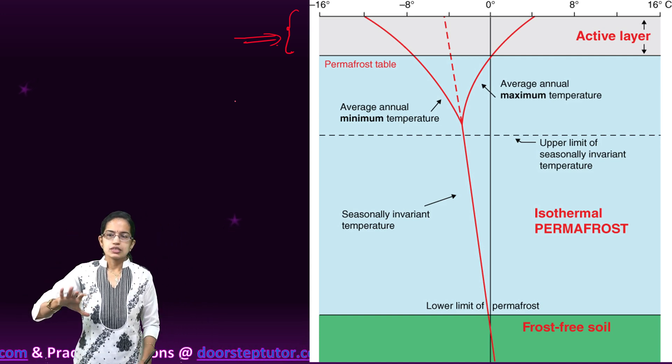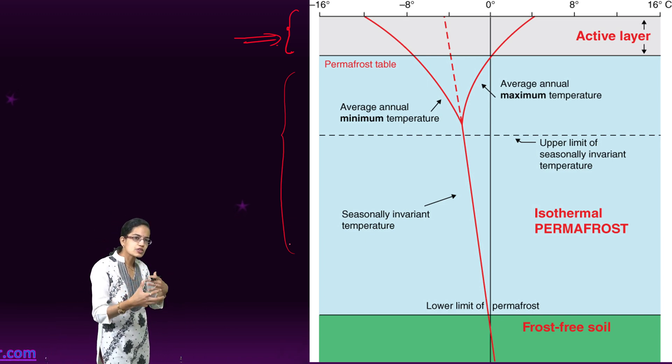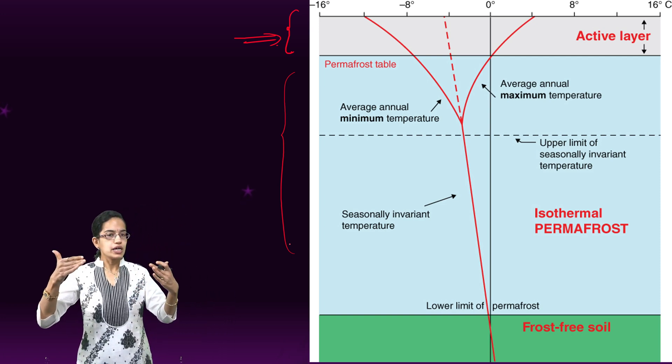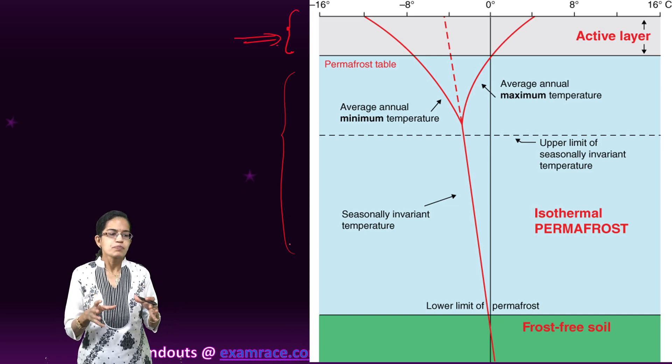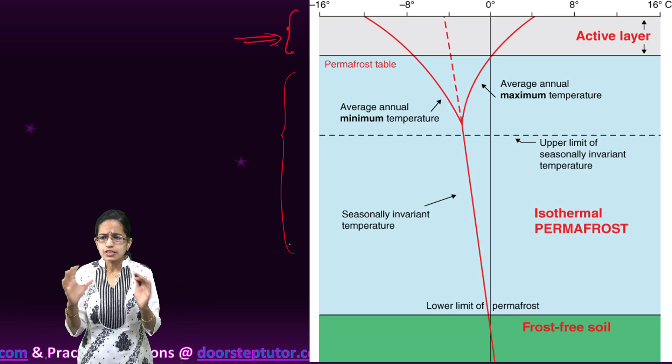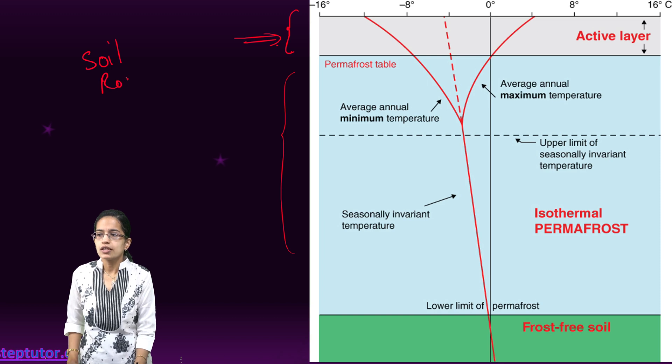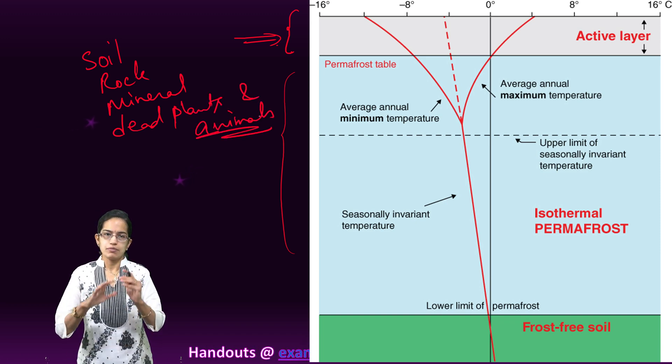The layer below this is the permanent permafrost. This layer is a mix of soil and minerals and remains permanently frozen below the active layer. Within this layer, we have ice bridges. Permafrost, overall, is a composition of ice with soil, rock, minerals and some of the dead animals and plants. All these are part and composition of the permafrost layer.